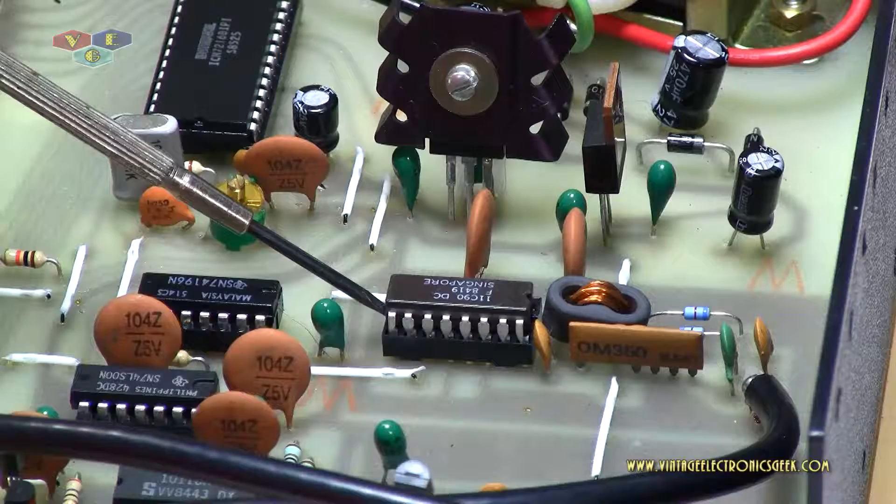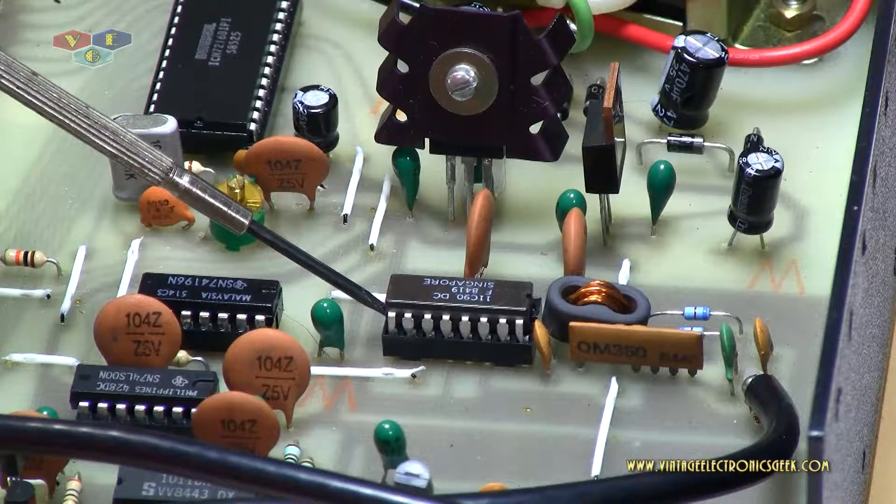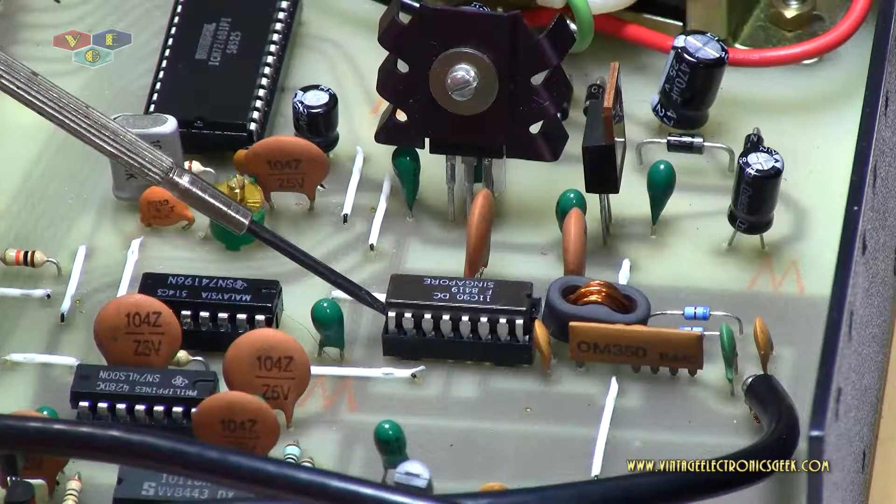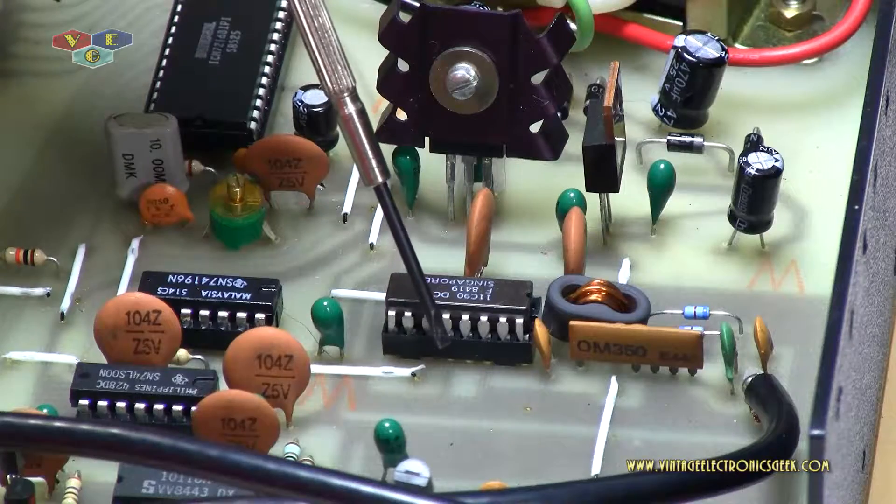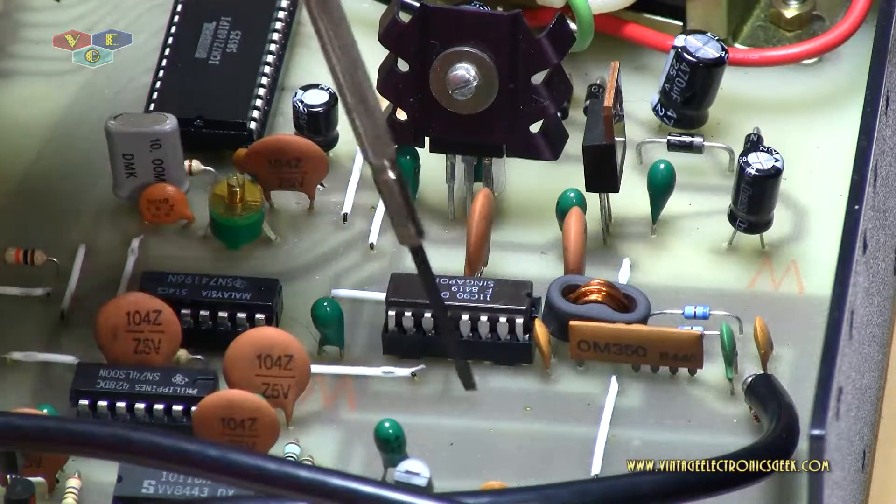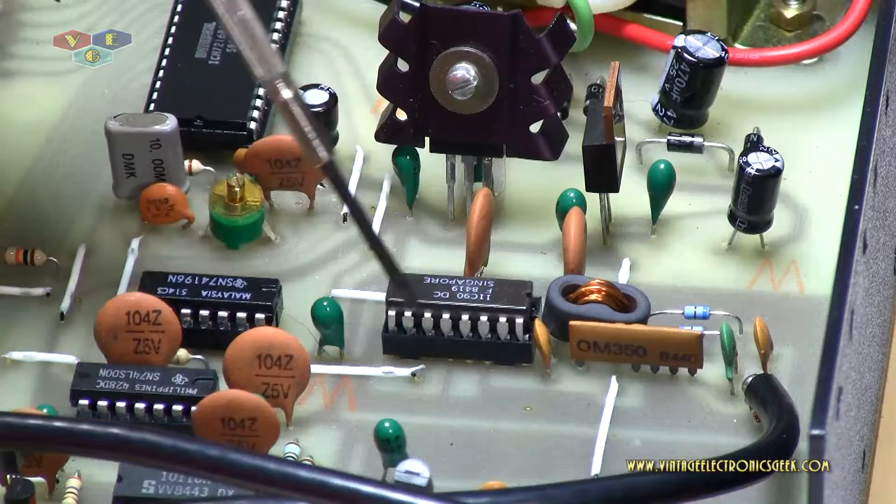The screwdriver does work. However, when you do pull the IC chip up, the front half of the legs are just fine. The rear half of the legs, however, are all bent.